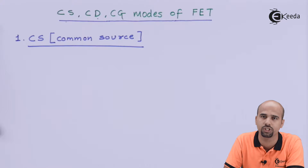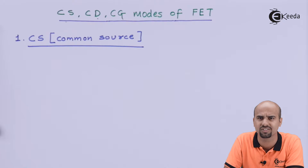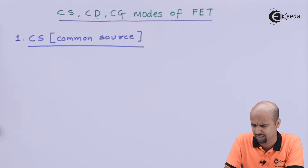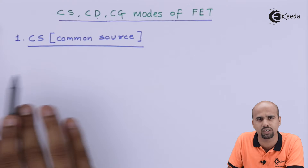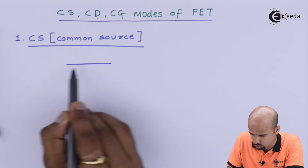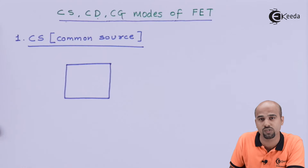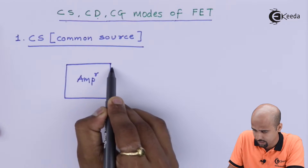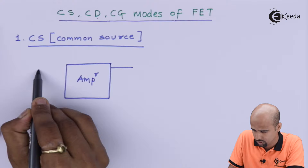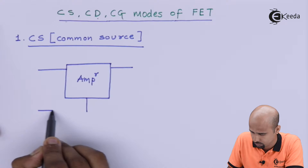Before jumping into all modes of FET amplifier, we need to understand why the term 'common' is used in Common Source, Common Gate, and Common Drain. In a two-port network, whenever we go for amplification, we must have a two-port network — meaning one input terminal and one output terminal, both connected with respect to something.